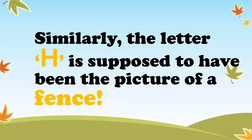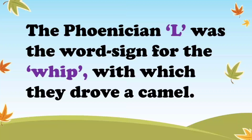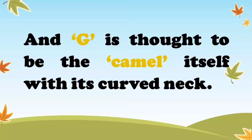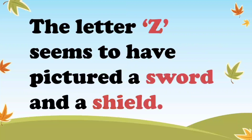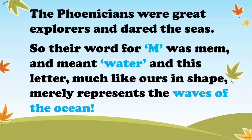Similarly, the letter H is supposed to have been the picture of a fence. The Phoenician L was the word sign for the whip, with which they drove a camel. And G is thought to be the camel itself, with its curved neck. The letter D, or Daleth, is a word sign which means doe, and looks like a doe as well. The letter Z seems to have pictured a sword and a shield. The Phoenicians were great explorers and dared the seas, so the word for M was mem and meant water — this letter, much like ours in shape, merely represents the waves of the ocean.